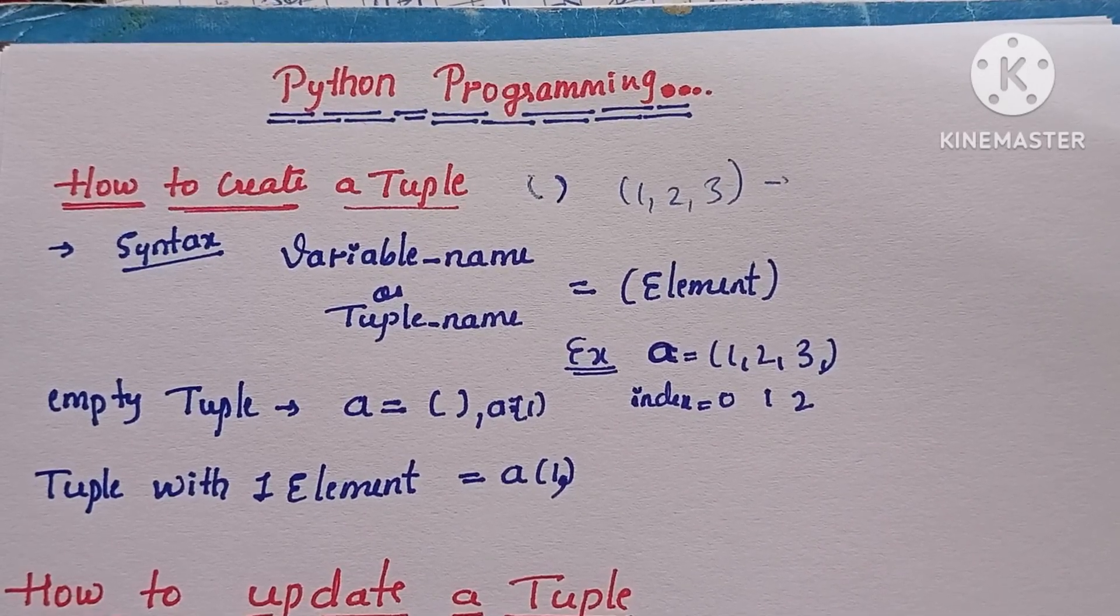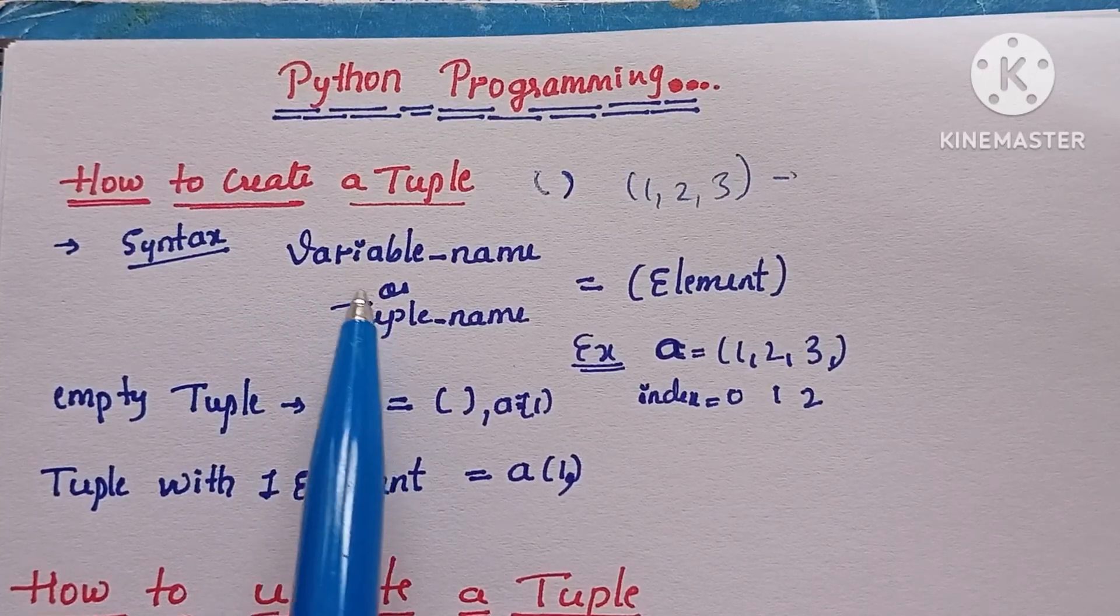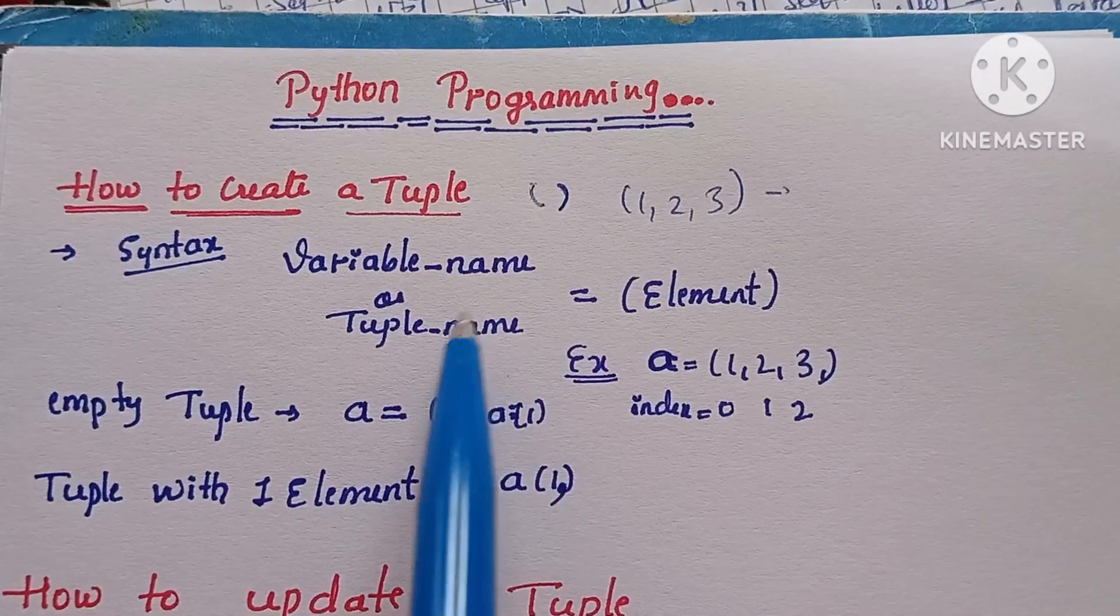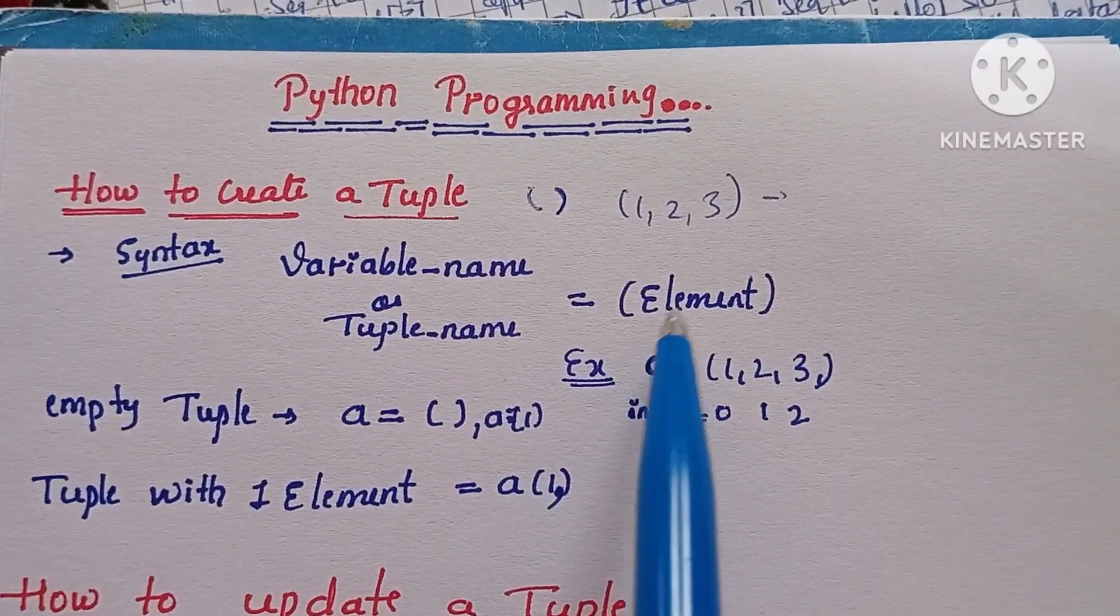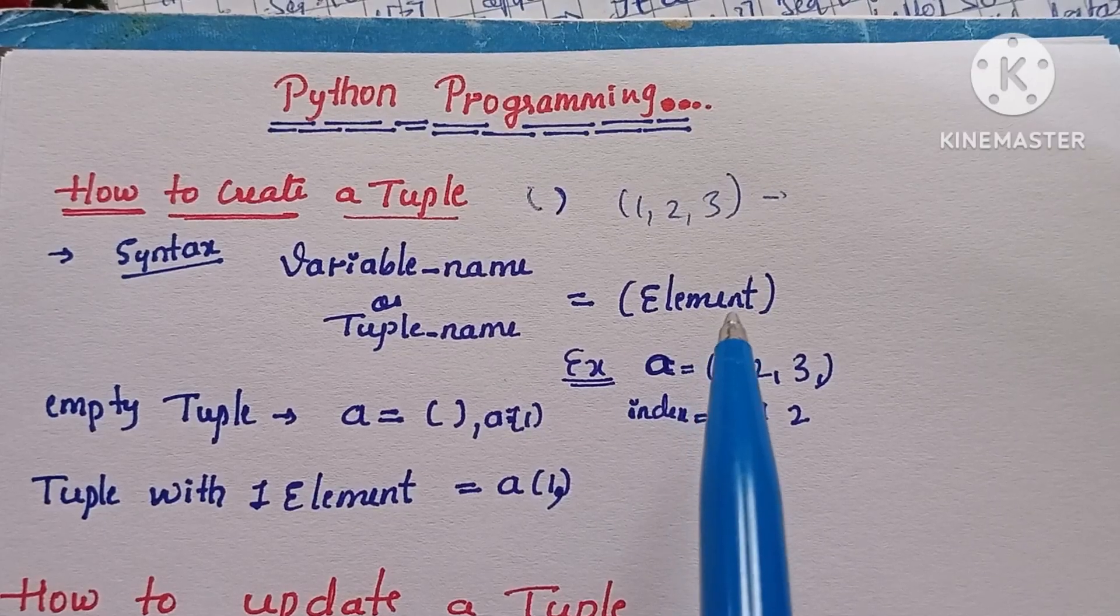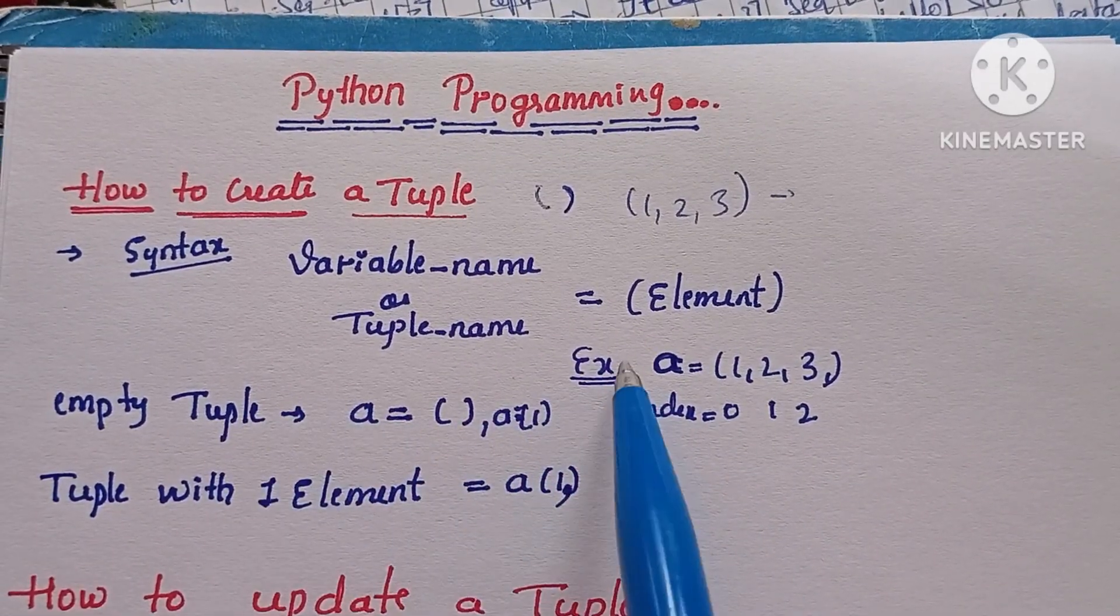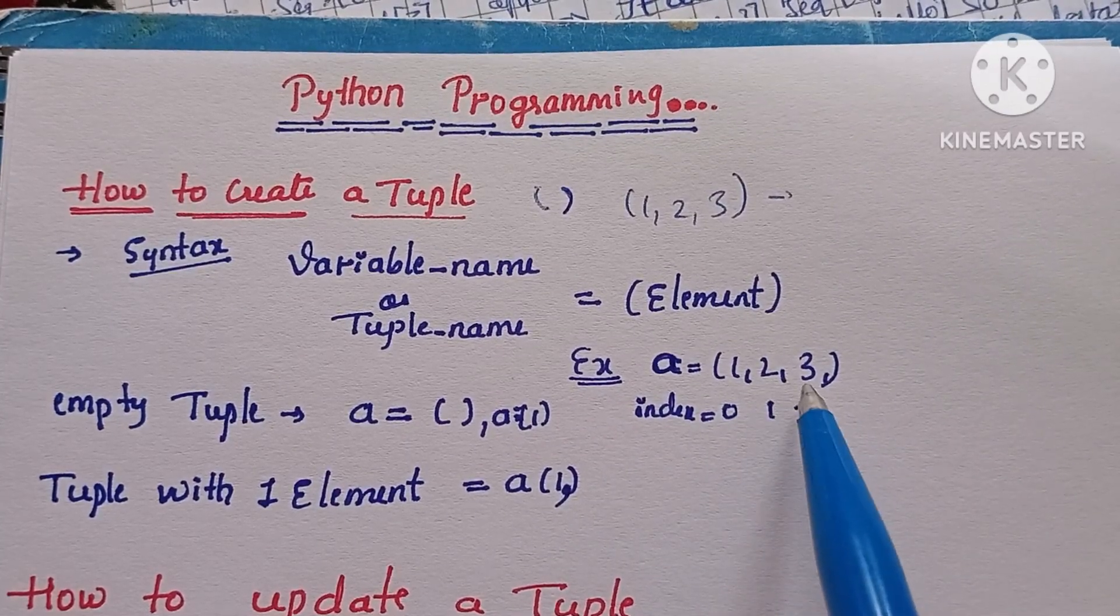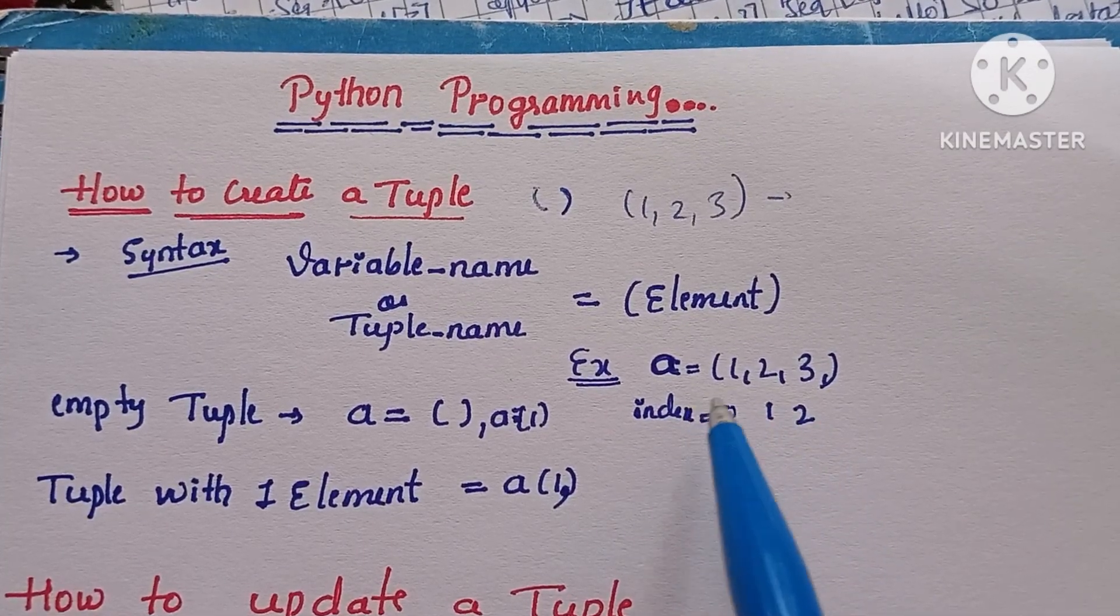First topic is how to create the tuple. We have to consider the variable name or tuple name equal to elements with parentheses. For example, a = (1, 2, 3). This is the creation of the tuple. Here I am taking 'a' as a tuple.